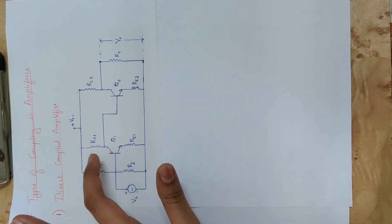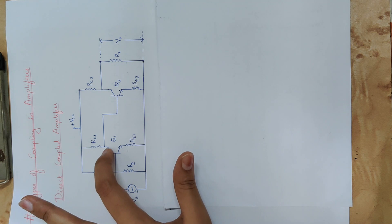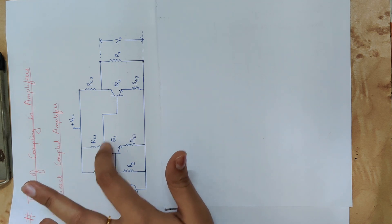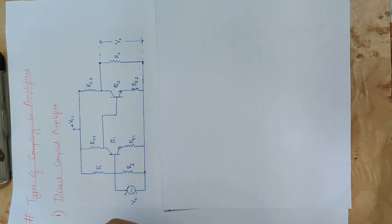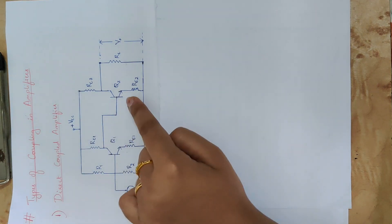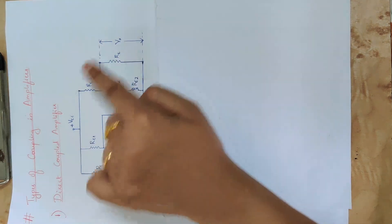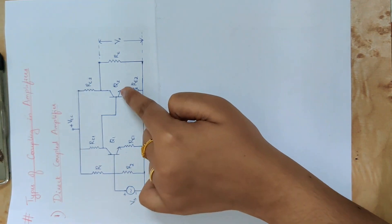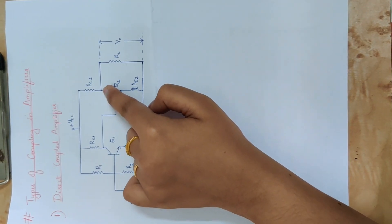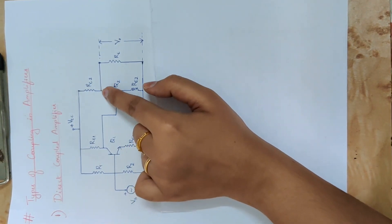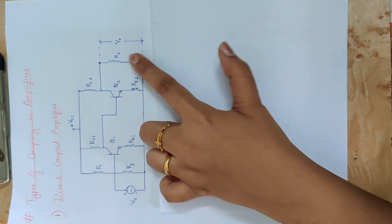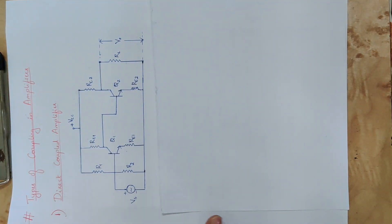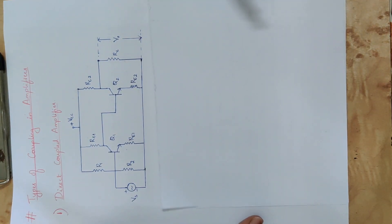The amplified output is taken from the collector. The collector output of the first transistor is applied directly to the base of the next transistor. It is applied to the next amplifier circuit, where it is again amplified, and the output is obtained at the collector. That is the basic working operation.